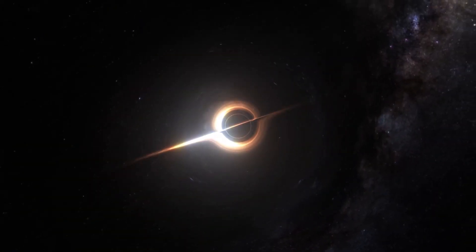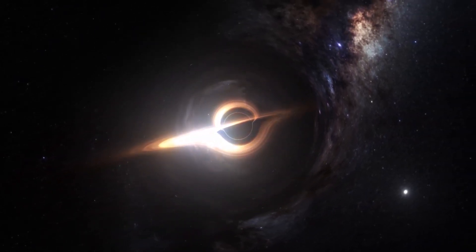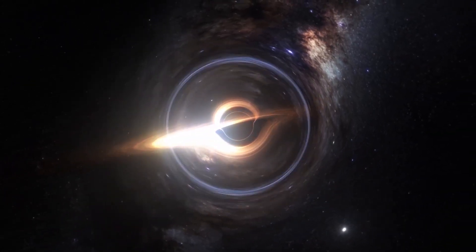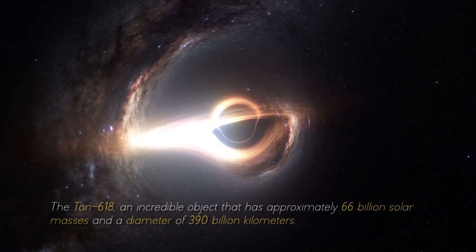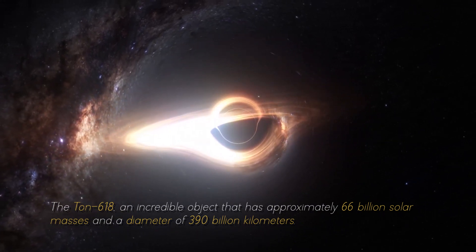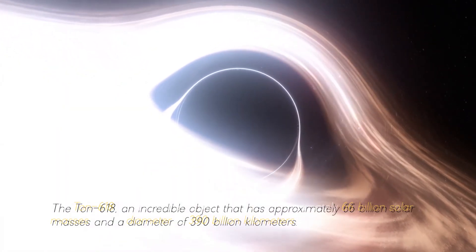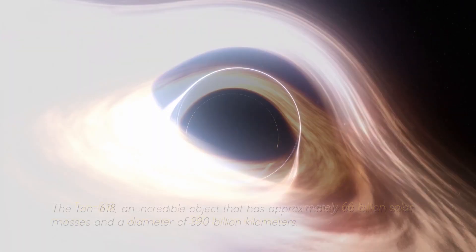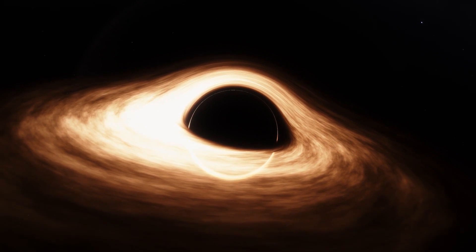Not everything ends here. This star cannot be compared with the most massive black hole in our cosmos, the Ton 618, an incredible object that has approximately 600 billion solar masses and a diameter of 390 billion kilometers. For now, we will stop measuring in kilometers and start measuring in light years.